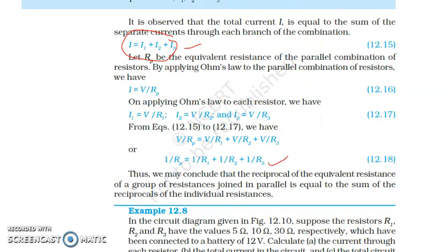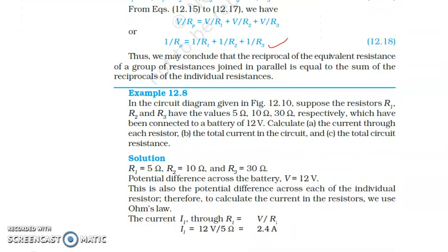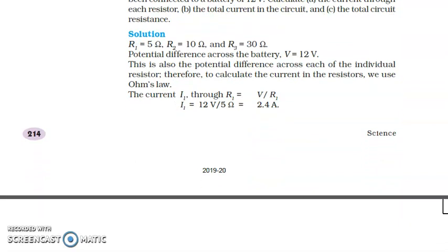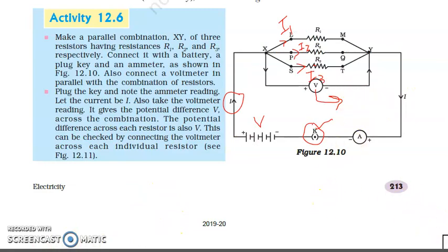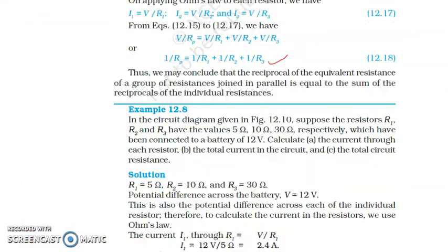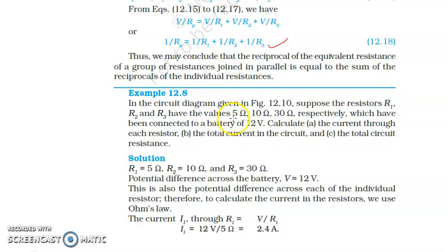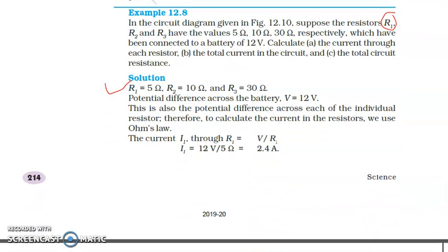Now let's proceed to the question. The question refers to circuit diagram figure 12.10. In this figure, R1, R2, and R3 have values 5 ohm, 10 ohm, and 30 ohm respectively, connected to a battery of 12 volts. We need to calculate: the current through each resistor, the total current in the circuit, and the total circuit resistance. So R1 = 5Ω, R2 = 10Ω, R3 = 30Ω, and V = 12V.